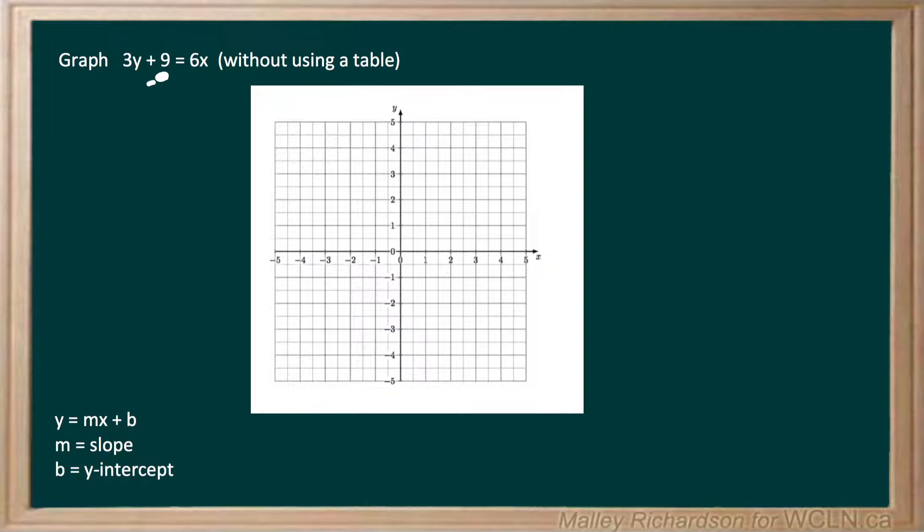To first do this, let's subtract 9 from both sides. So we're left with 3y equals 6x minus 9.